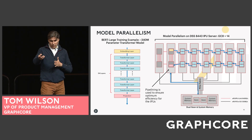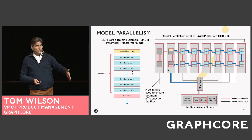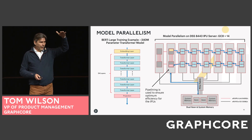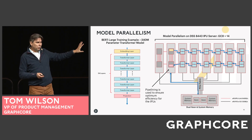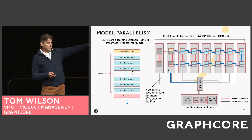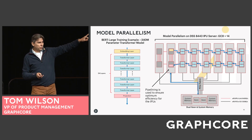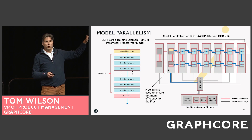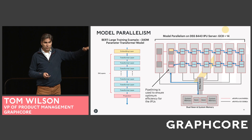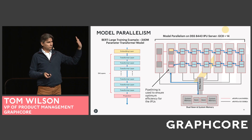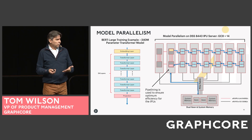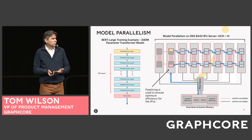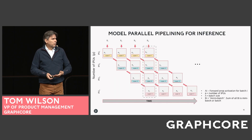You can see that the forward pass goes from the embedding layer through each of the layers, with activations passed from layer to layer. Those layers, if you follow the color coding, have been mapped onto the C2 cards, and the blue arrows show how the forward pass moves through the IPUs through the various layers. This is a training example, so the backward pass would move back the opposite way. Pipelining plays a really important role here and is built in to the Poplar SDK.